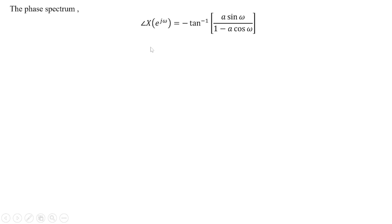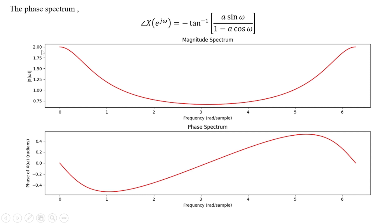Now let us plot the graphs. Here is the magnitude spectrum graph, and here is the phase spectrum graph. Looking at the magnitude spectrum, at the initial condition where frequency ω = 0, we can observe the behavior of the spectrum.